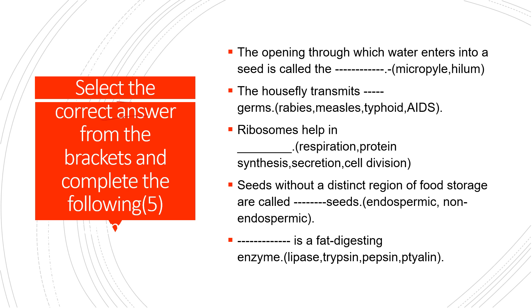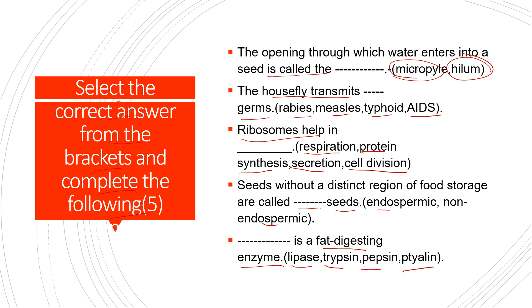Next: 'Select the Correct Answer from the Brackets and Complete the Following.' (1) The opening through which water enters a seed is called the micropyle or the hilum. (2) The housefly transmits germs of: rabies, measles, typhoid, or AIDS. (3) Ribosomes help in: respiration, protein synthesis, secretion, or cell division. (4) Seeds without a distinct region of food storage are called endospermic or non-endospermic. (5) The fat-digestive enzyme is: lipase, trypsin, pepsin, or ptyalin.